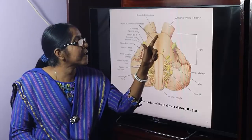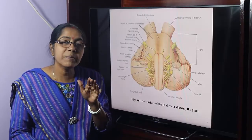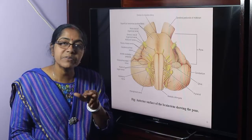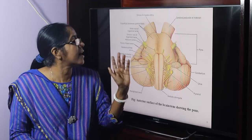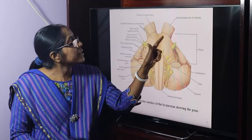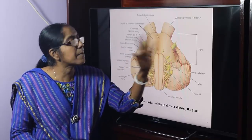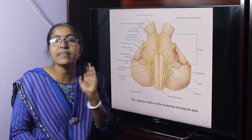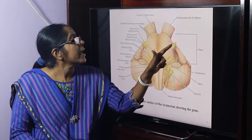What is the basilar artery? The basilar artery is formed by the union of the two vertebral arteries. On the ventral surface, the fifth nerve — the trigeminal nerve — can be identified.